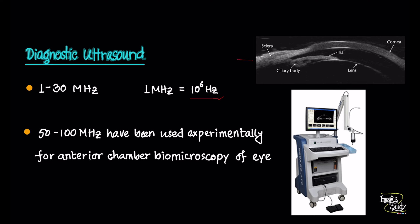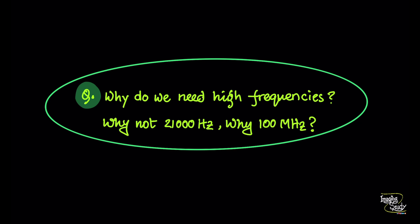One of these sub-specialties is ophthalmic ultrasound. In ophthalmic ultrasound, to visualize the anterior chamber or to perform anterior chamber biomicroscopy, we use 50 to 100 megahertz frequency. Experimentally, journals have shown the use of even 200 megahertz.